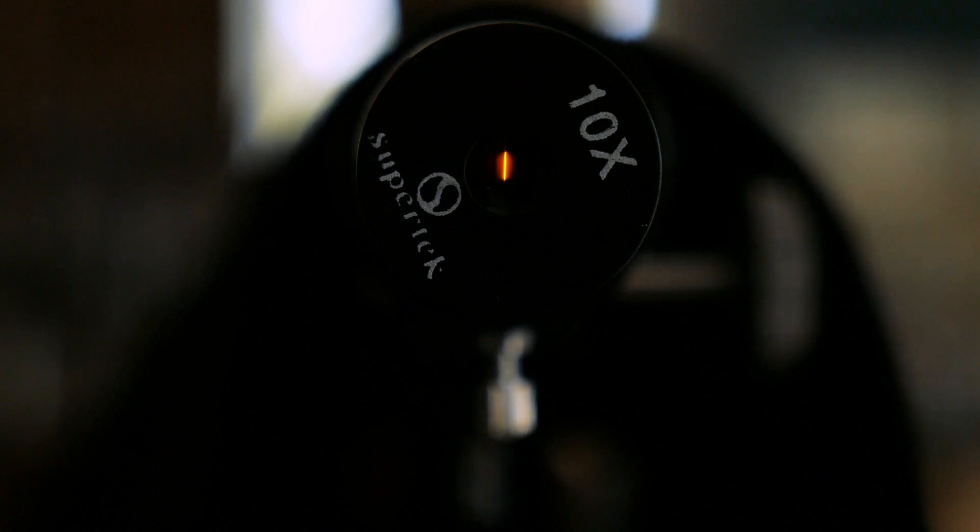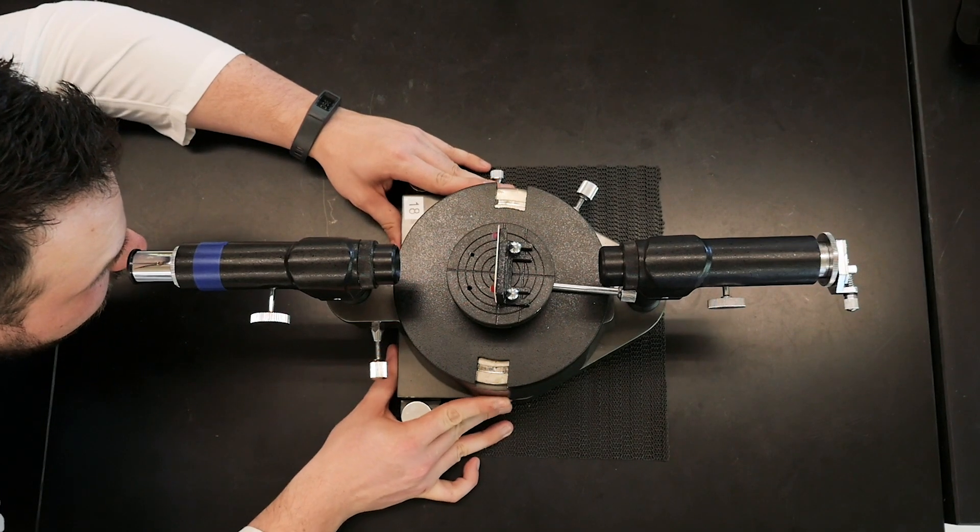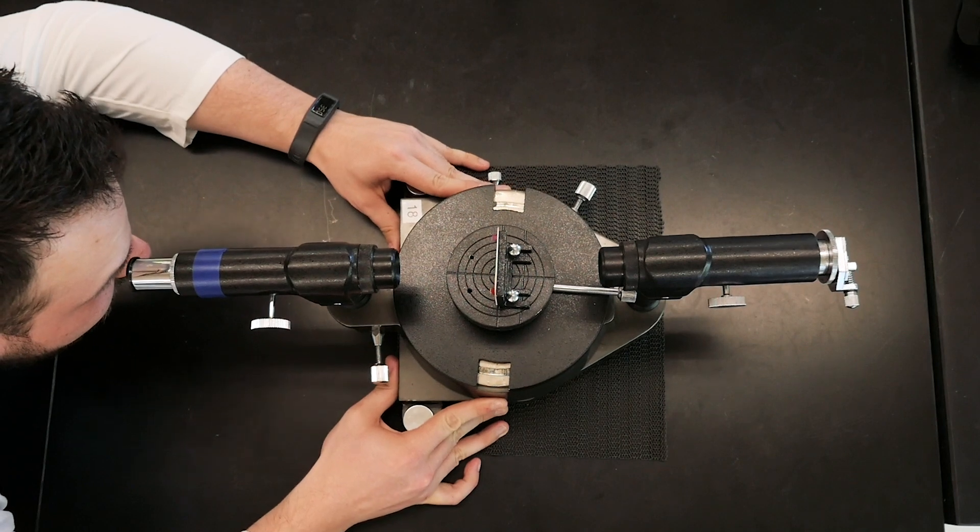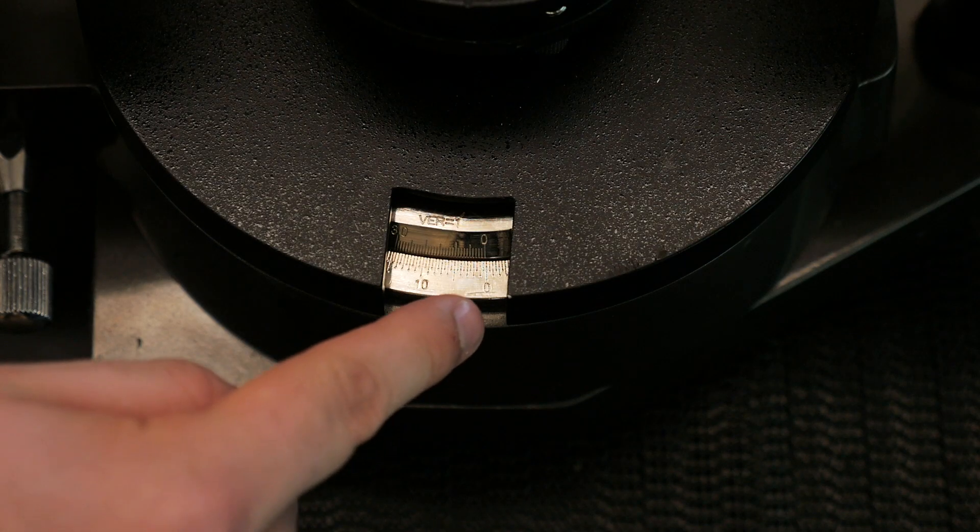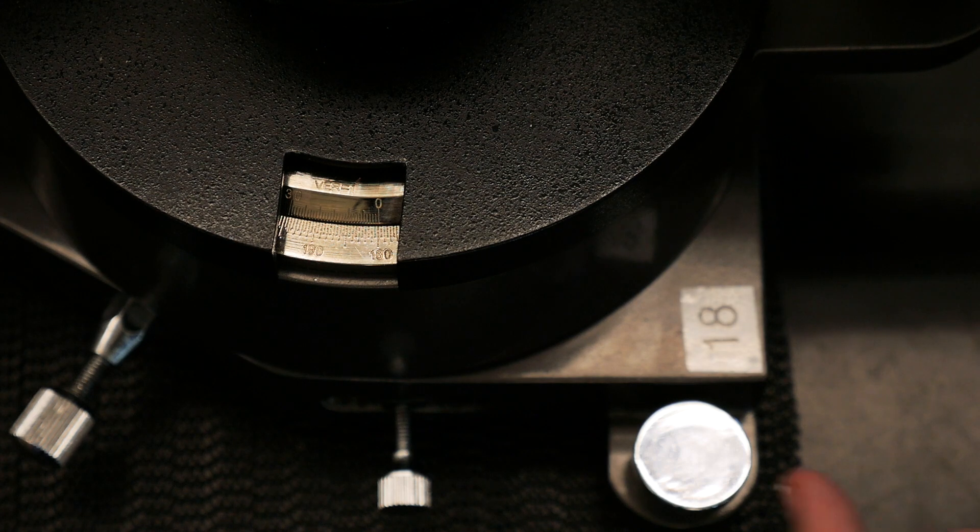Instead, you can slide the entire spectroscope from side to side slightly if necessary. It's important to make sure that the crosshair you see when looking through the telescope is exactly centered on the slit of light, and that the angle measurements on the scope read zero degrees on the right side and 180 degrees on the left.